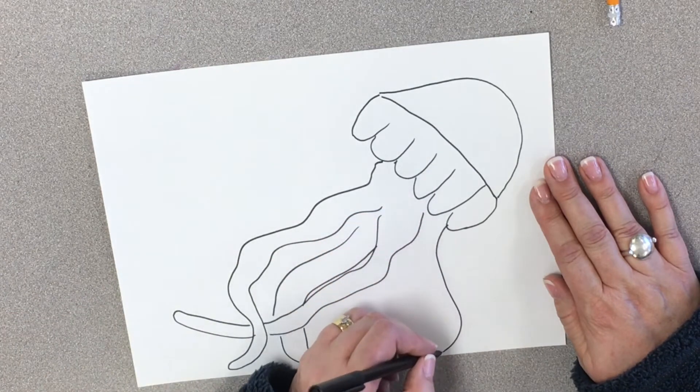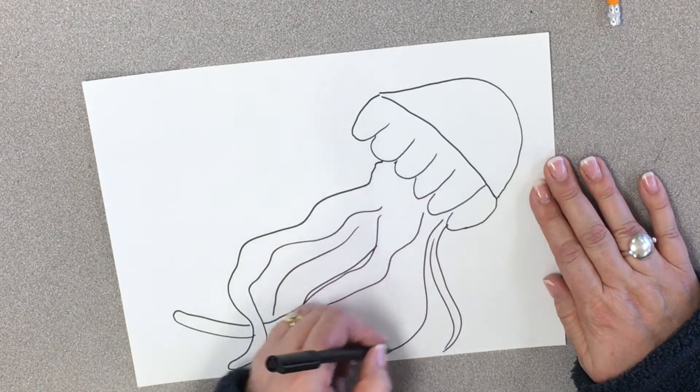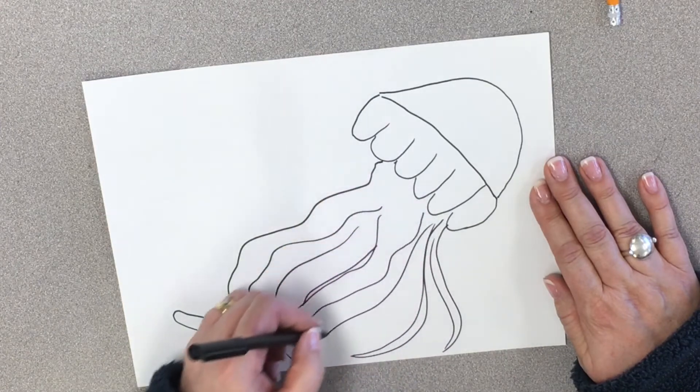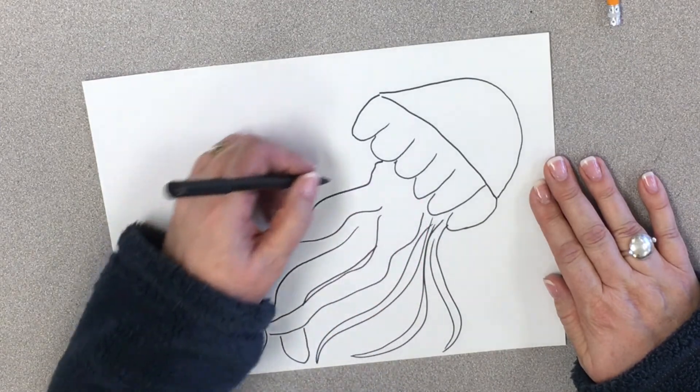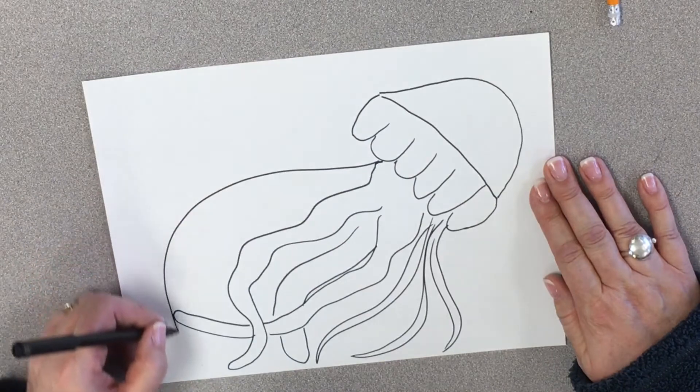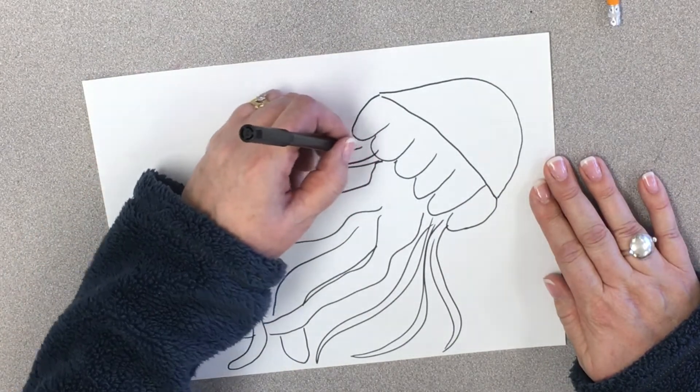And then we're going to draw all the little tentacles coming out that are so super skinny. And we're just going to flutter and fly around.